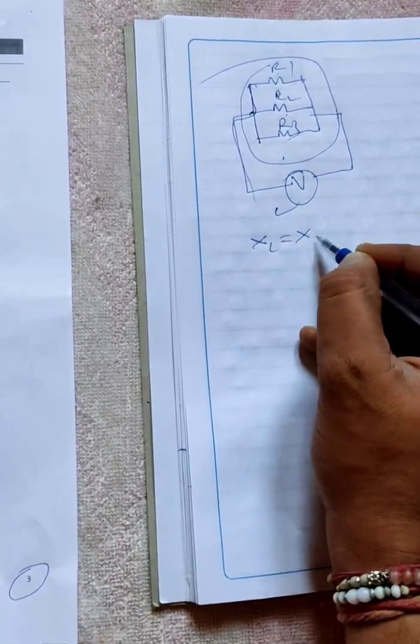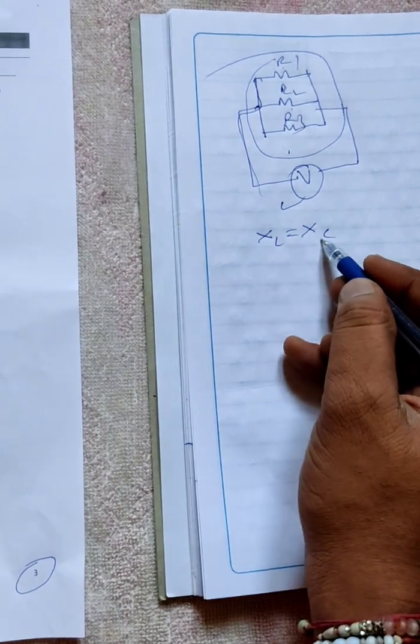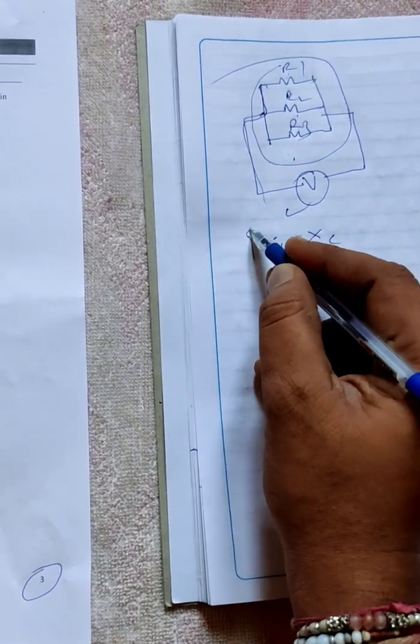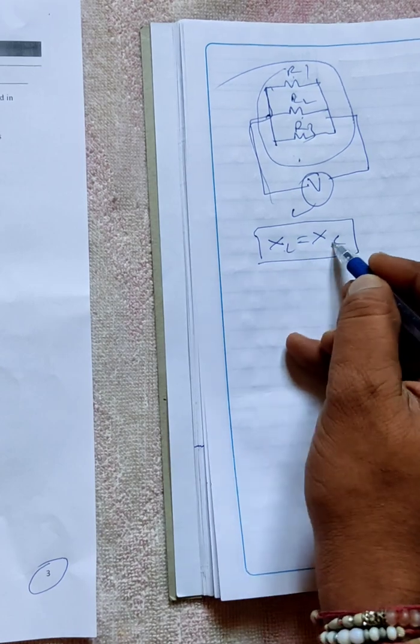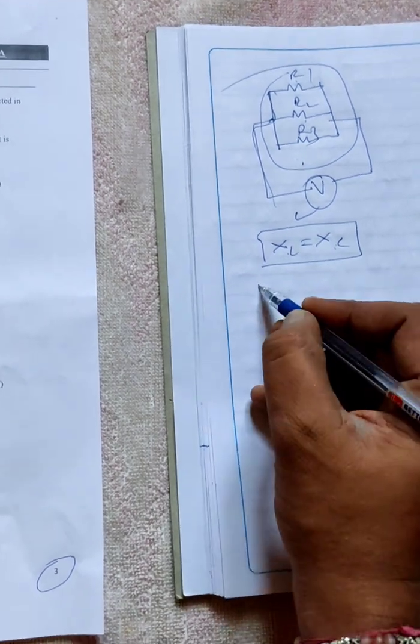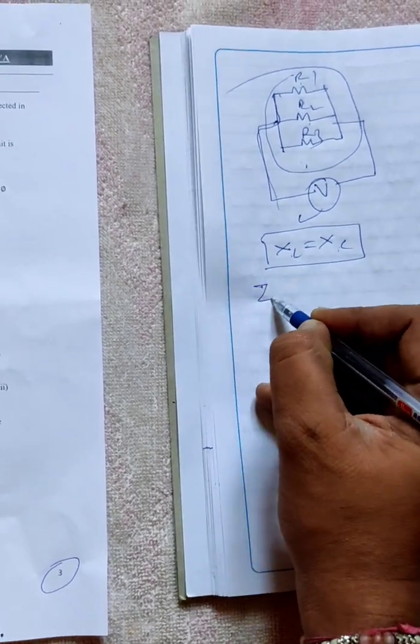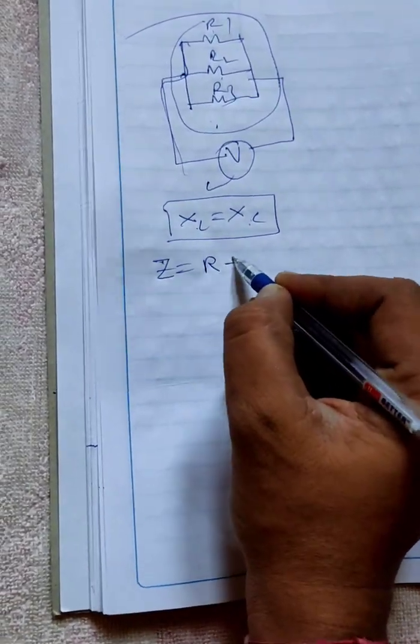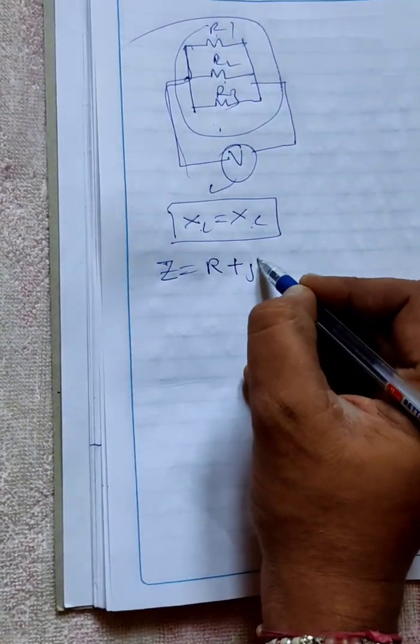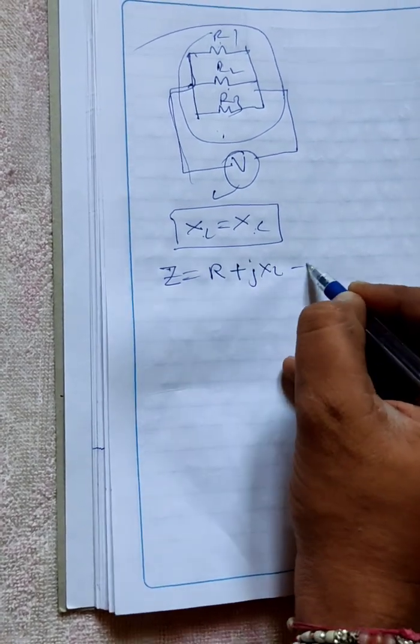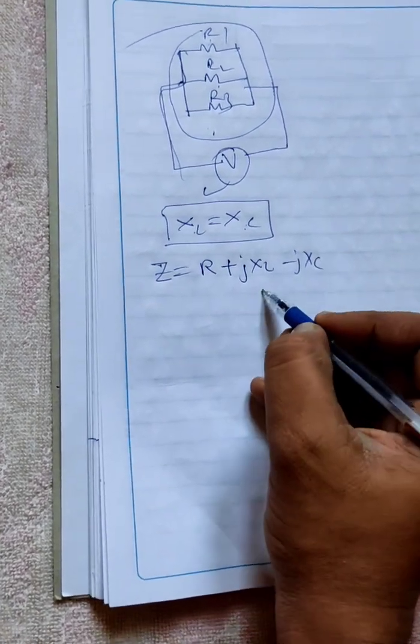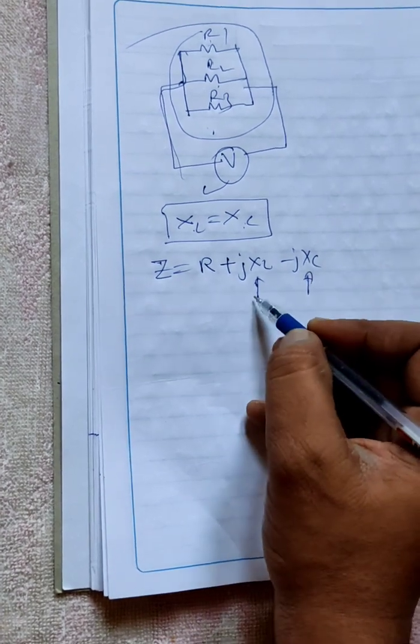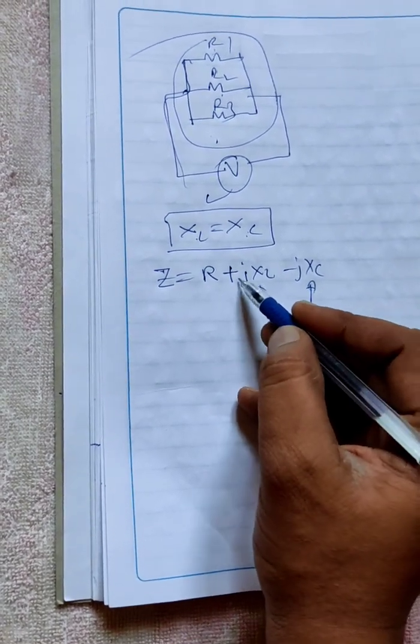The reactance should be zero. Unity power factor occurs when XL should be equal to XC. This should be the reactance condition. When XL equals XC, then only you can predict unity power factor. In series RLC circuit, the impedance is written like R plus j XL minus j XC.